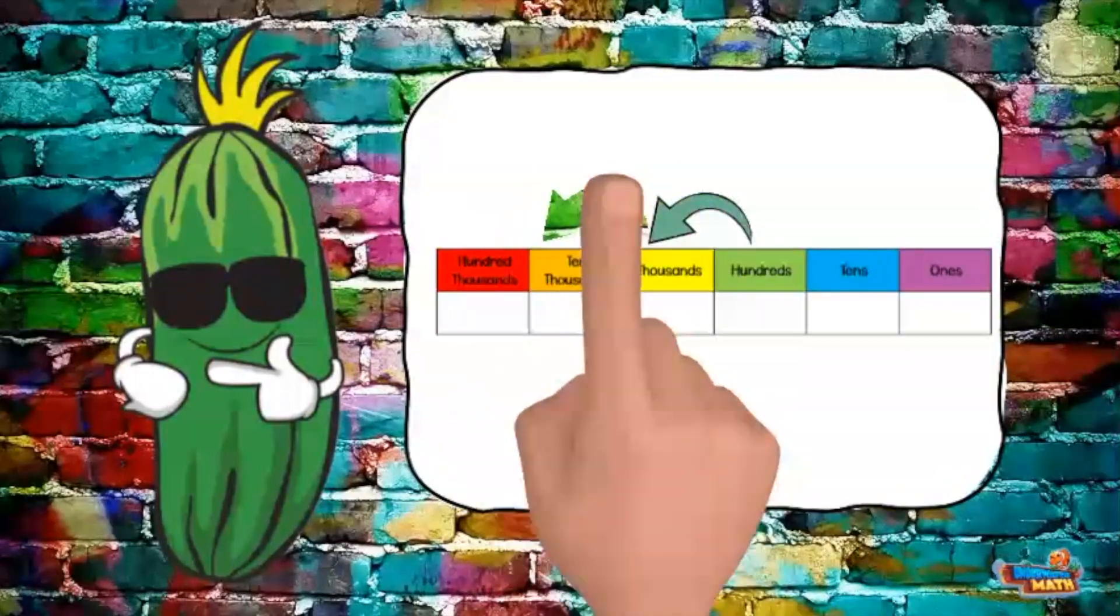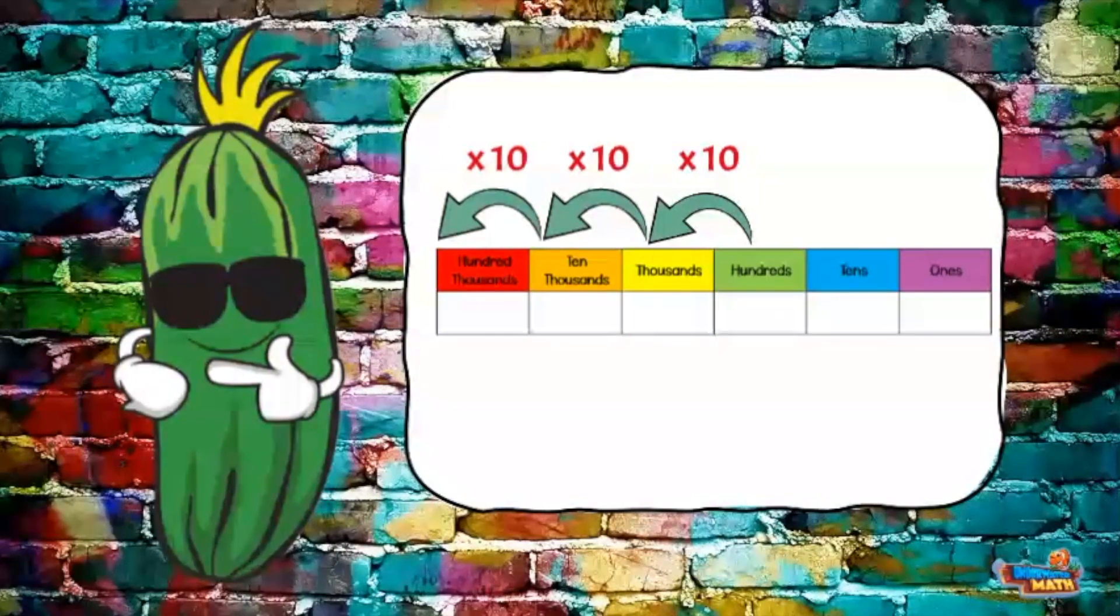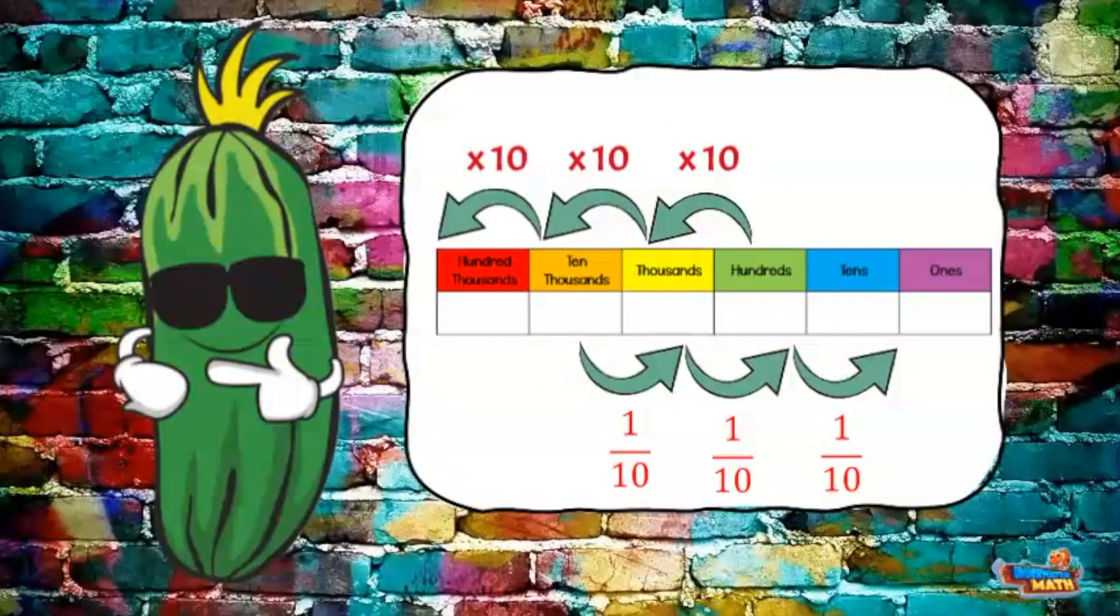As we move to the left on the place value chart, the value of the digit gets 10 times larger. As we move to the right on the place value chart, the value of the digit is one-tenth of the value.